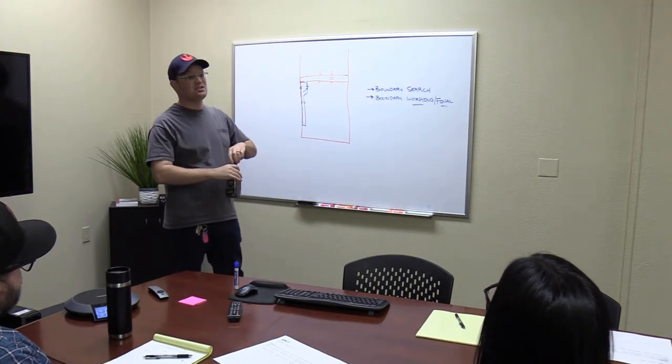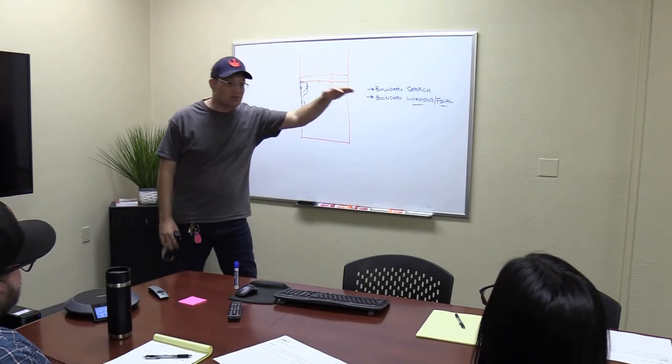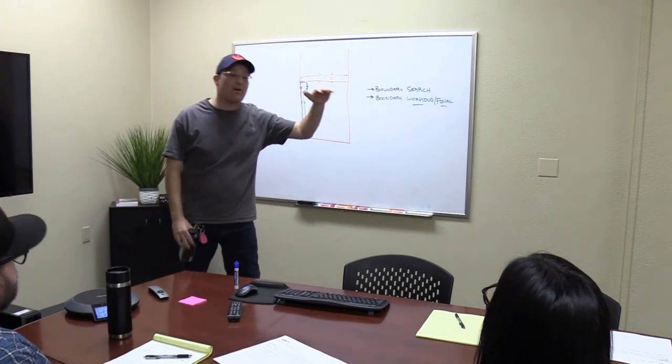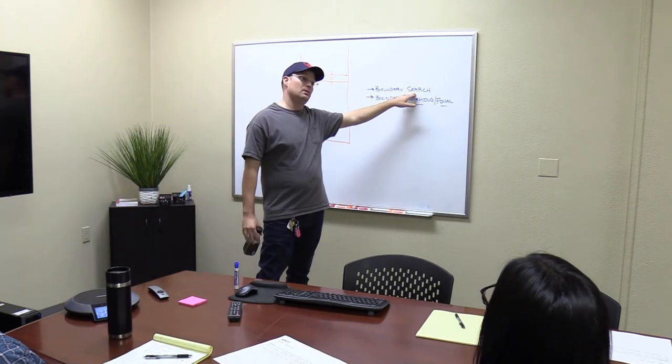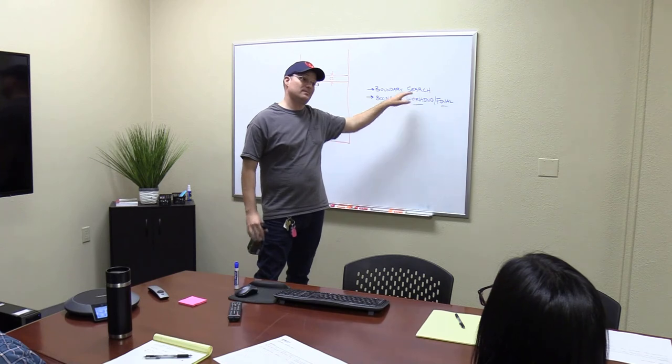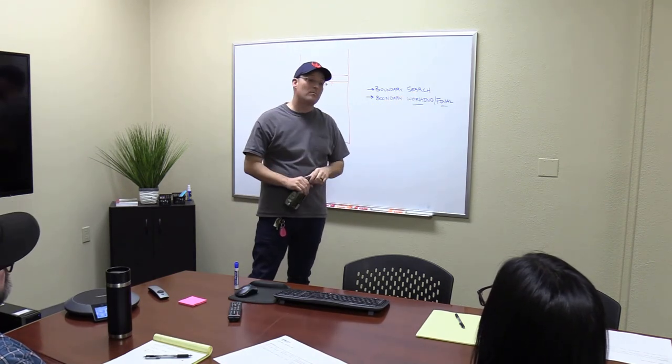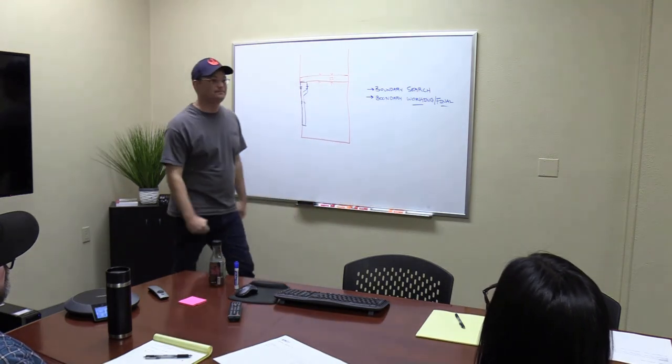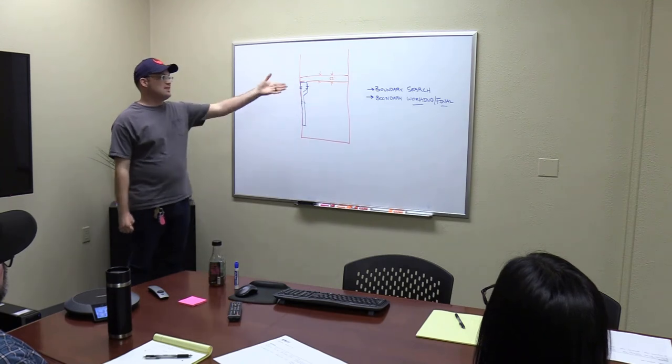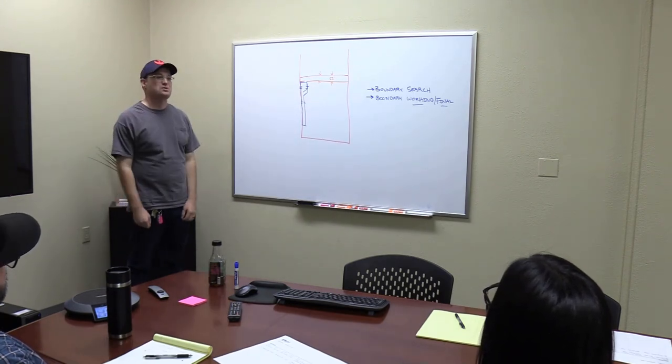When you get into the working drawing, I don't want to see - I shouldn't see any document numbers. It's either v-boundary-fee, v-boundary-easement, v-boundary-tie. If I want to know where something came from, I either look at the notes or I go back to the search drawing. And the search drawing - that block's going to be labeled by the doc? Yes.